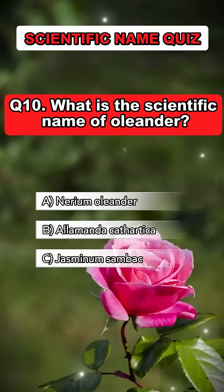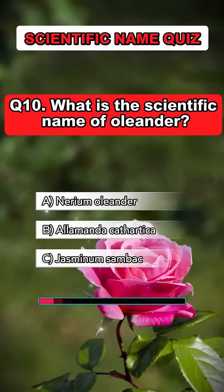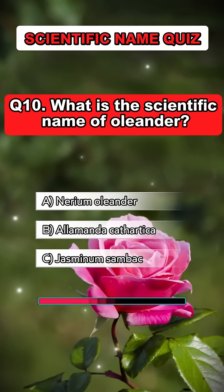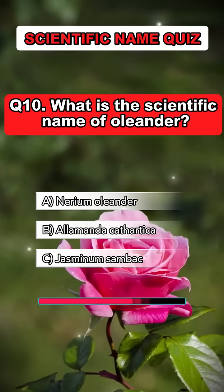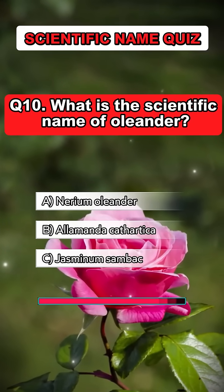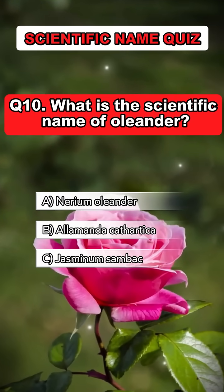Question 10. What is the scientific name of oleander? Answer A. Nerium oleander.